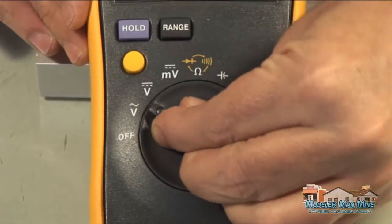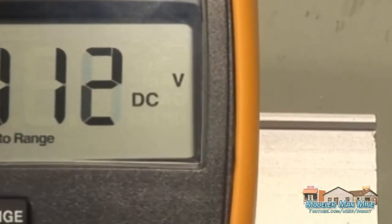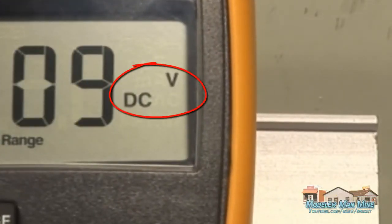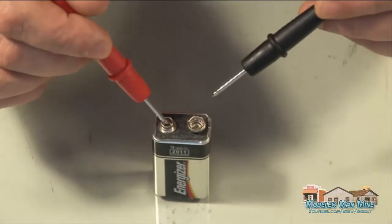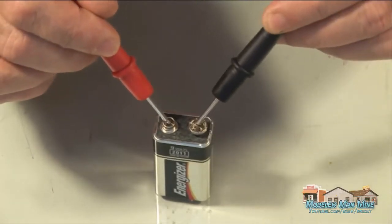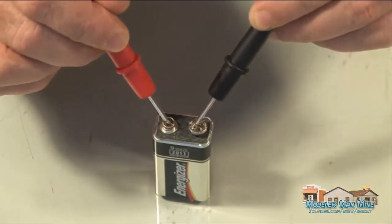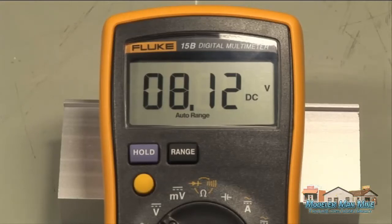Select the voltage on the dial. And ensure that I'm on DC volts using the function key selector. I touch the positive and the negative probes to the positive and negative poles on the battery and get my reading.